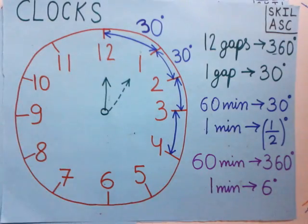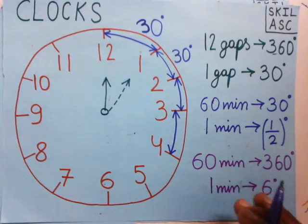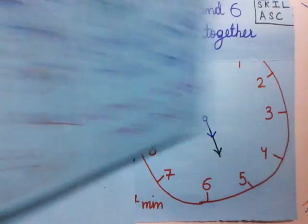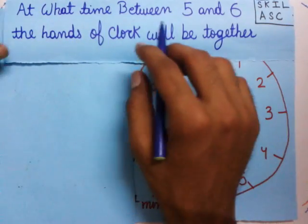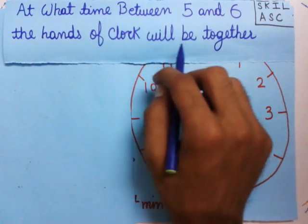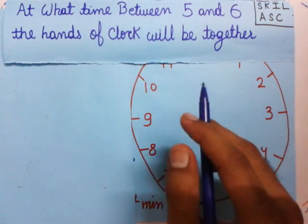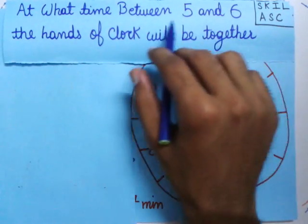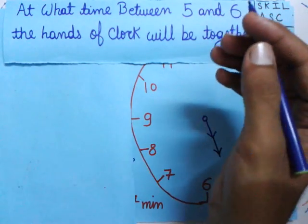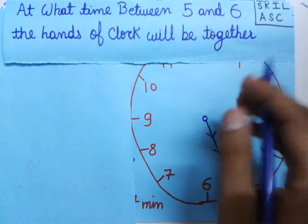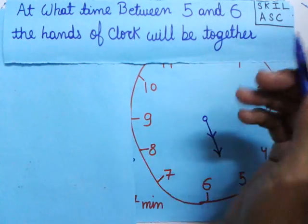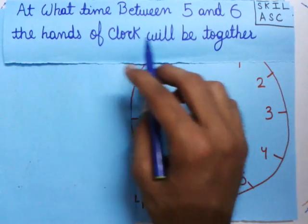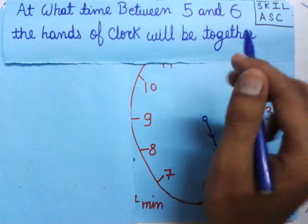Welcome to learn about clocks. We are going to learn a very important question: at what time between 5 and 6 will the hands of the clock be together? The time must be between 5 and 6 — it can be 5:15, 5:40, 5:45, 5:55, any time between 5 and 6 — and the condition is that the hands of the clock must be together.